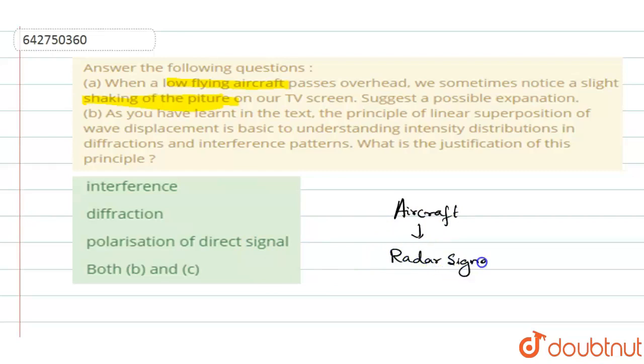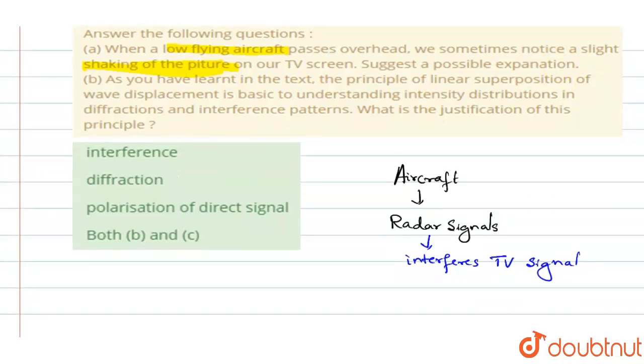So when you have these radar signals in an aircraft, these radar signals sent by the aircraft interfere with the TV signal. Because of the interference of those two, the TV signals get distorted. You will be having a variation in the wavelength and frequency. And when it interferes, you get a different superposition amplitude. So when there is a difference in all these amplitude and intensity, you get the slight distortion. This deals with the distortion of TV screen. So this is the answer for the first question.